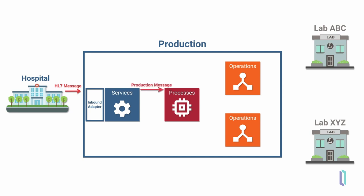The production messages from the business service are sent to a business process for message handling and routing. A business process can receive messages from multiple business services and send messages to multiple business operations.